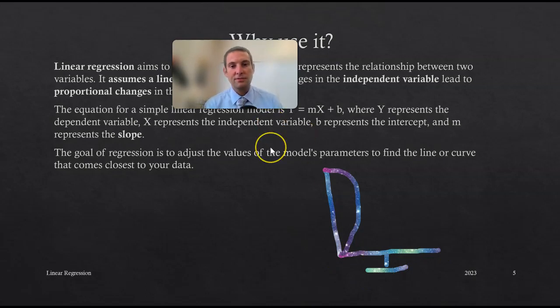The goal of regression is to adjust the value of the model's parameters to find the line or curve that comes closest to your data, the line of best fit.